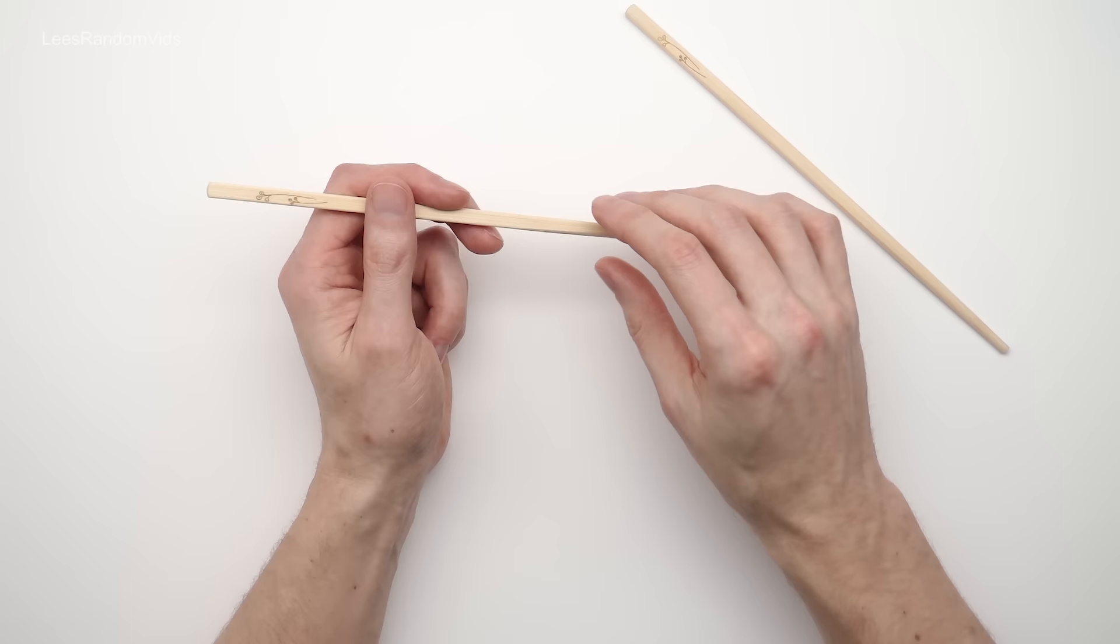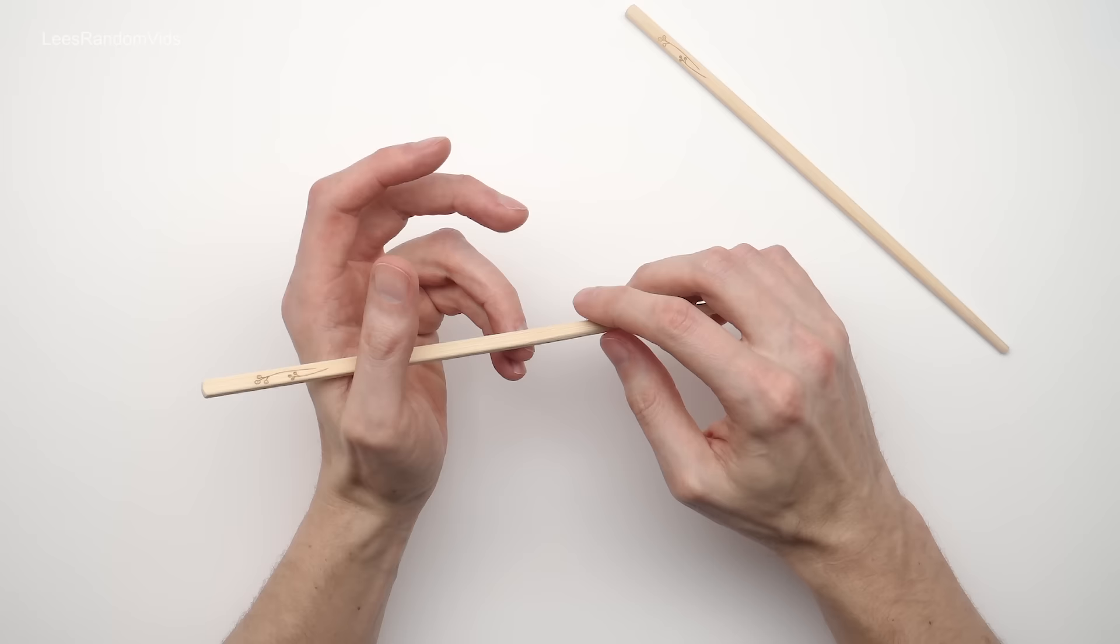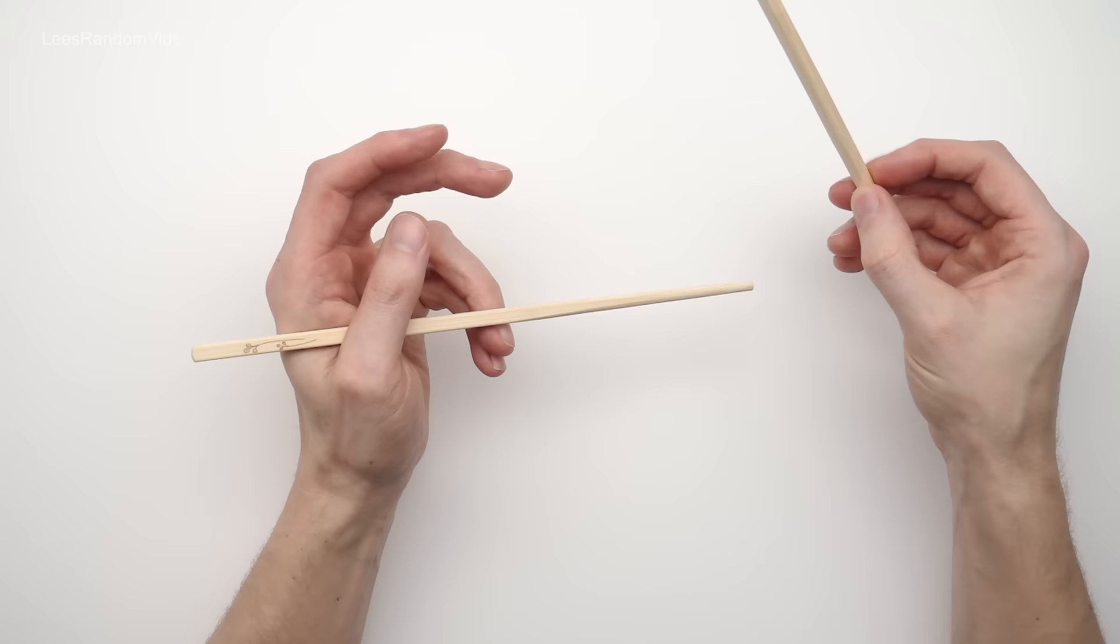So when you've got the hang of that, you can place the bottom chopstick back in place at the base of your thumb against the side of your ring finger at your nail, lay your thumb over it, and then take your top chopstick and put it back in place again.